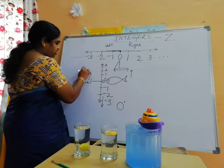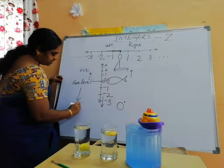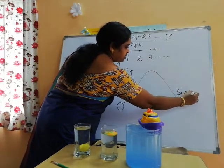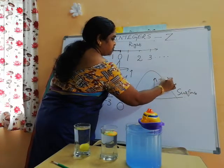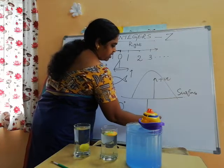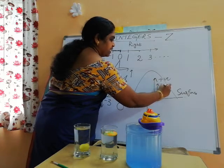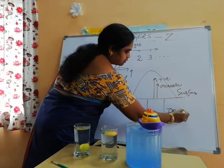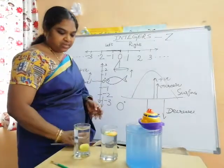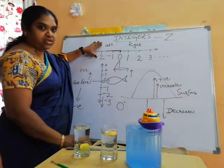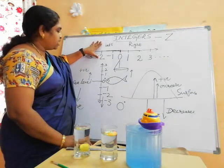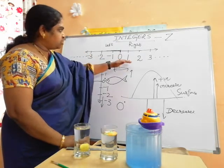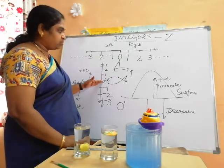Above sea level, we have positive values. Below sea level, we have negative values. Similarly, if you take a mountain — this is the surface of the mountain. These are the positive values above, and from here downwards these are negatives. When we go upwards the value increases; when we go downwards the value decreases. This is the horizontal line showing the number line — you can show it either horizontal or vertical, but the concept is the same: negative, positive, along with zero.